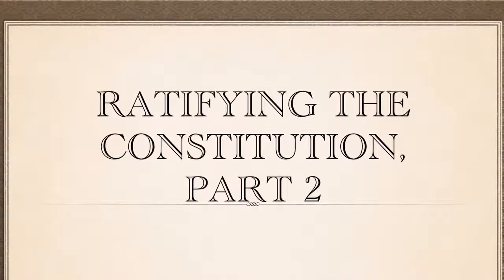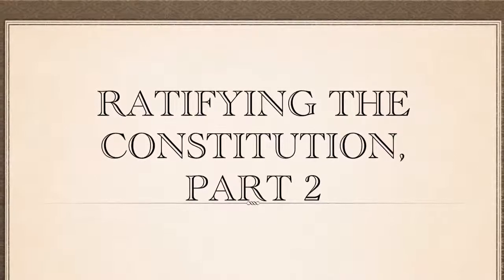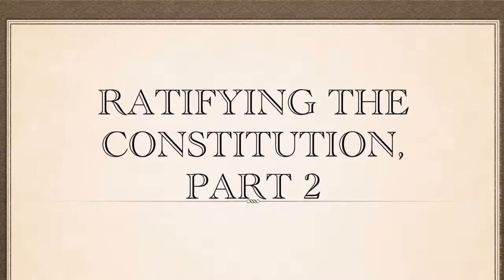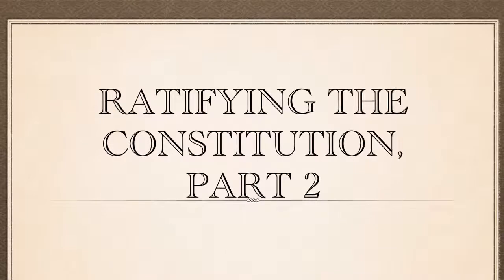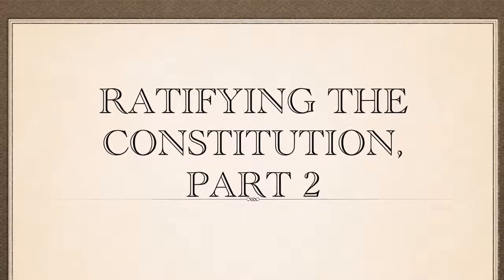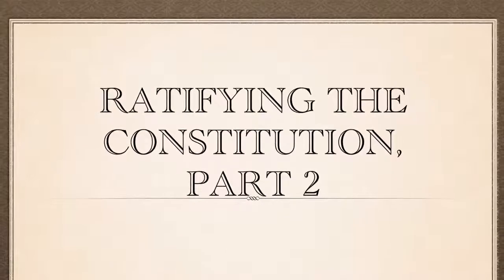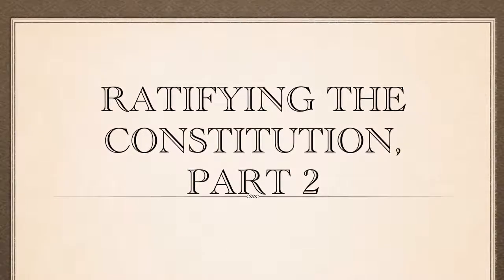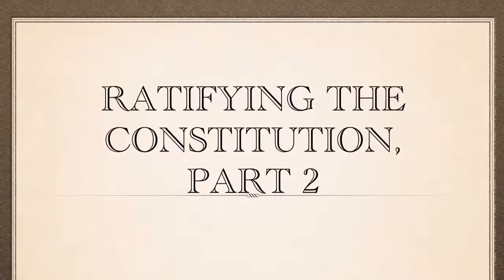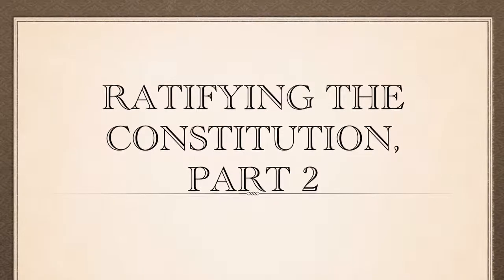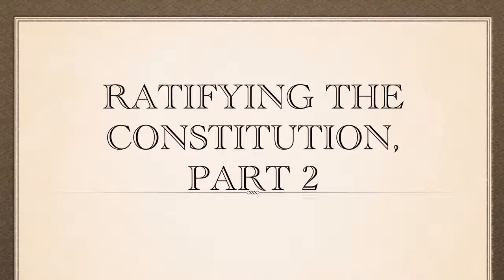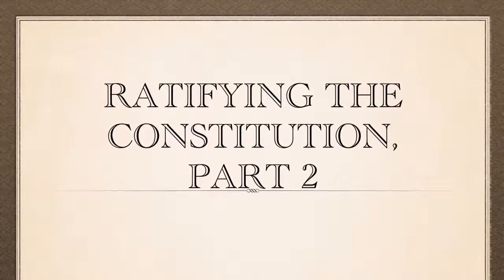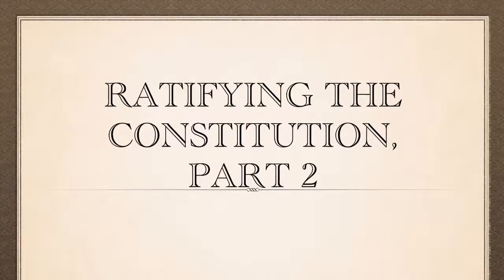In this episode, we're going to continue looking at various clauses of the Constitution that people had issues with. In the previous video, we looked at the General Welfare Clause and the Necessary and Proper Clause. In this one, we'll focus on the Commerce Clause and the Supremacy Clause, as well as the Bill of Rights.